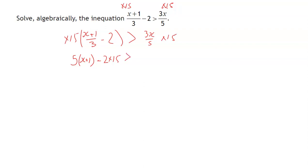That's going to then be greater than the 3x over 5 times 15. Well, 15 divided by 5 is 3, so that's going to end up being the equivalent of 3x times 3, which will give me 9x. So if I only take the bracket on the left, I expand the bracket, start to simplify things, I'll then be able to solve my inequality as I normally would.